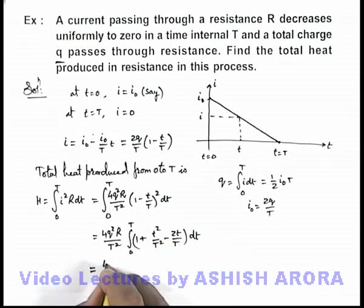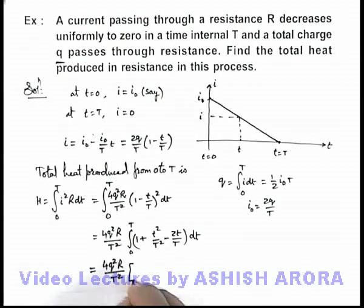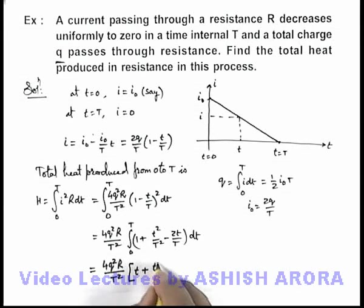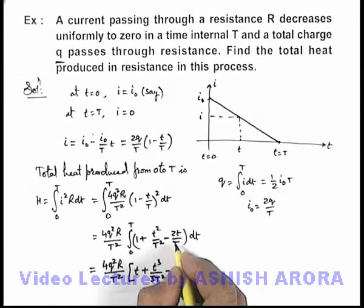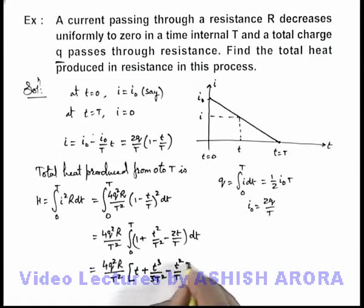Now if we integrate, you can see what we are getting: (4q²R/T²) times [integration of 1 is t, plus integration of t² will be t³/(3T²), minus integration of t is t²/2]. Here 2 gets cancelled out, so this will be t²/T, and we apply limits from zero to T.